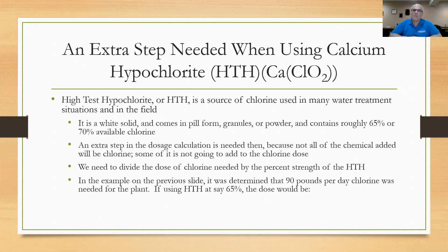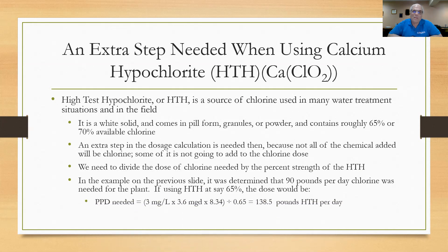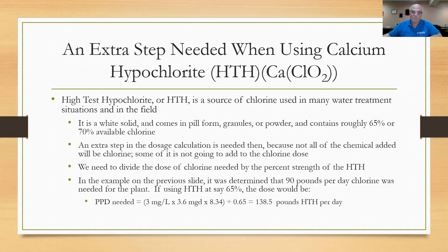In the example from the previous slide, we determined we needed 90 pounds per day chlorine for the plant. If we were using HTH at 65% to do that same job, the dose would be calculated as: pounds per day equals 3 mg/L times 3.6 MGD times 8.34, all divided by 0.65. That works out to 138.5 pounds of HTH needed per day, because of that 138.5 pounds, only 90 pounds — or 65% — is actual chlorine. You might need to set the feeder in pounds per day or grams per minute, but you can see that calculation needed that extra step.